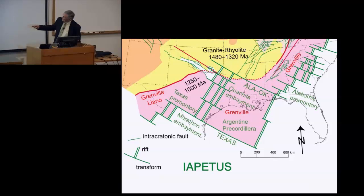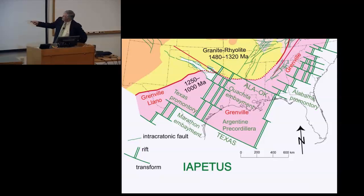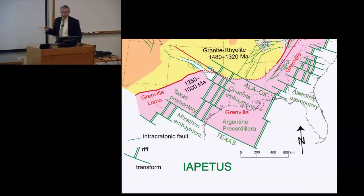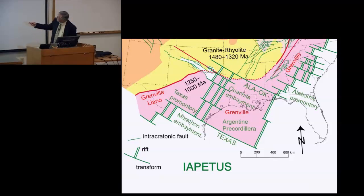The granite-rhyolite rocks of pre-Grenville North America shown in yellow have ages of about 1,480 to 1,320 Ma. Most rocks in the Precordillera have ages around 1,200 Ma, so they're part of the Grenville. But that one sample is 1,370 Ma — older than Grenville. We suggest the Grenville front originally crossed along something like this, and when the Precordillera broke away, it took this little piece of the granite-rhyolite province with it.